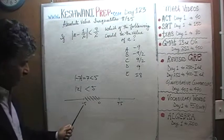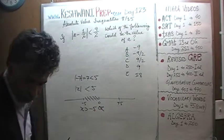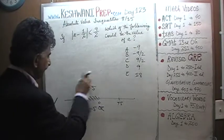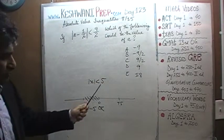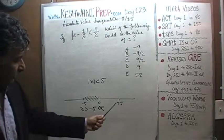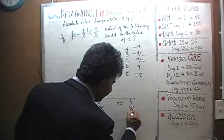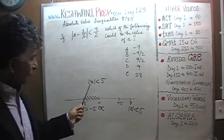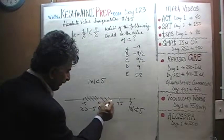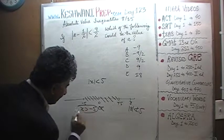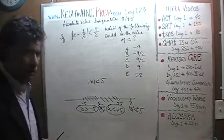X has to be more than negative five. In this region, can X be eight? No, because the absolute value of eight is not less than five. X can be four, three, two — anything in this region. So X has to be more than negative five and less than positive five.